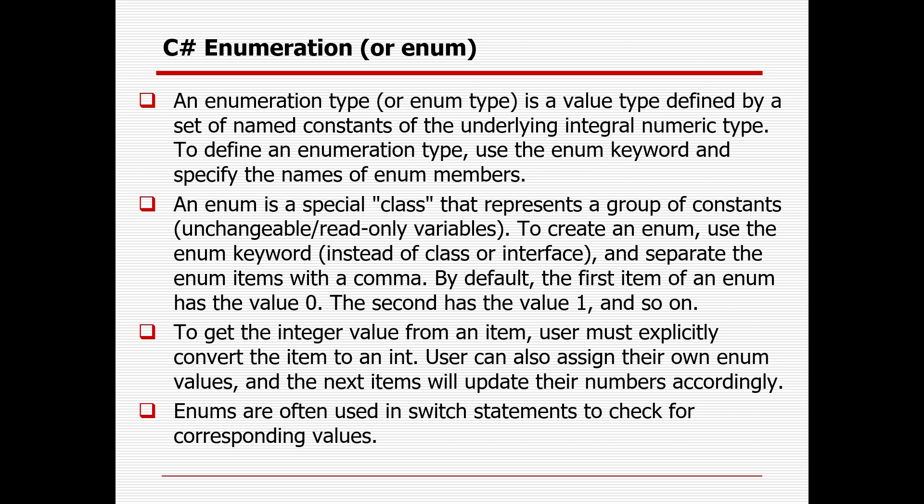If you define these 12 months, by default the first month January will start from zero and the last month December will go up to 11. But there is a provision — you can change the default value to any number. For example, if you define February as 11 instead of 1, then March will be 12 accordingly, and your December will be calculated as 21 instead of 11.